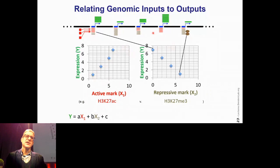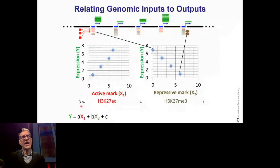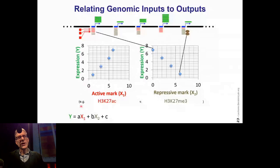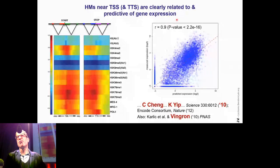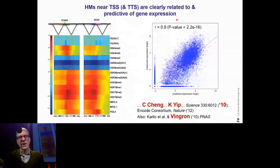It turned out that with fairly straightforward machine learning techniques — support vector regression, much simpler than the deep learning stuff people are doing now — you could make pretty good models. Here's a model done for the worm genome, where we're looking at many different histone marks and bins around the TSS. This is from the big ENCODE paper in 2012, and it had an R of 0.9 — that's pretty good for bioinformatics predictions.